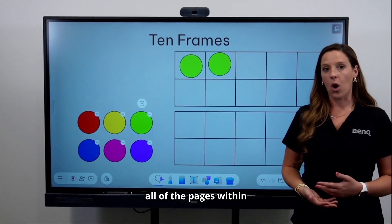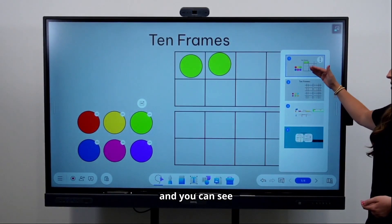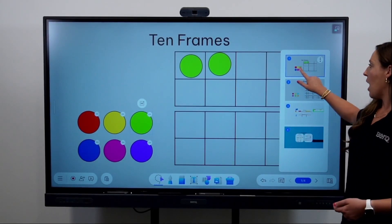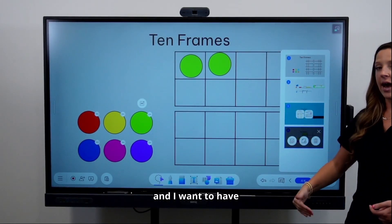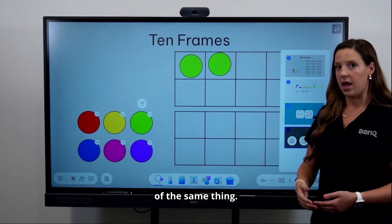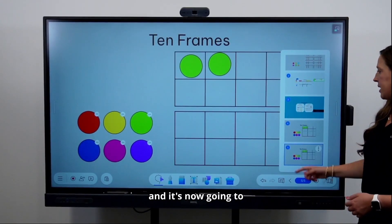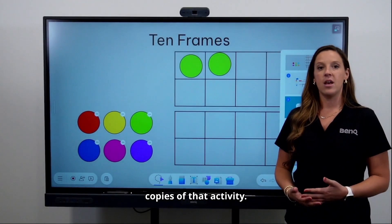You can also manage all of the pages within this lesson by tapping on the page numbers, and you can see how many different slides there are. I can click and drag to reorder, or maybe I want to duplicate and have multiple slides of the same thing. I can tap the three dots, tap the copy icon, and it's now going to duplicate that slide.